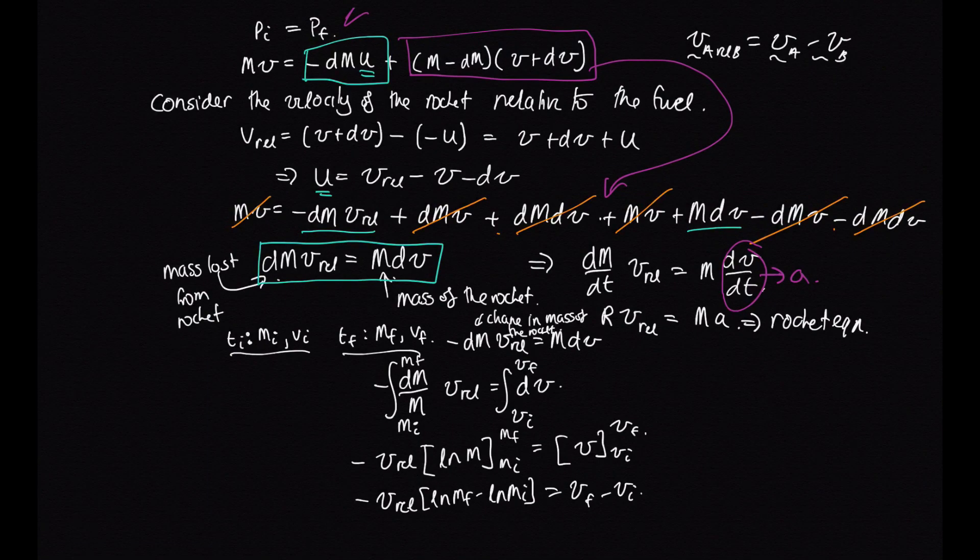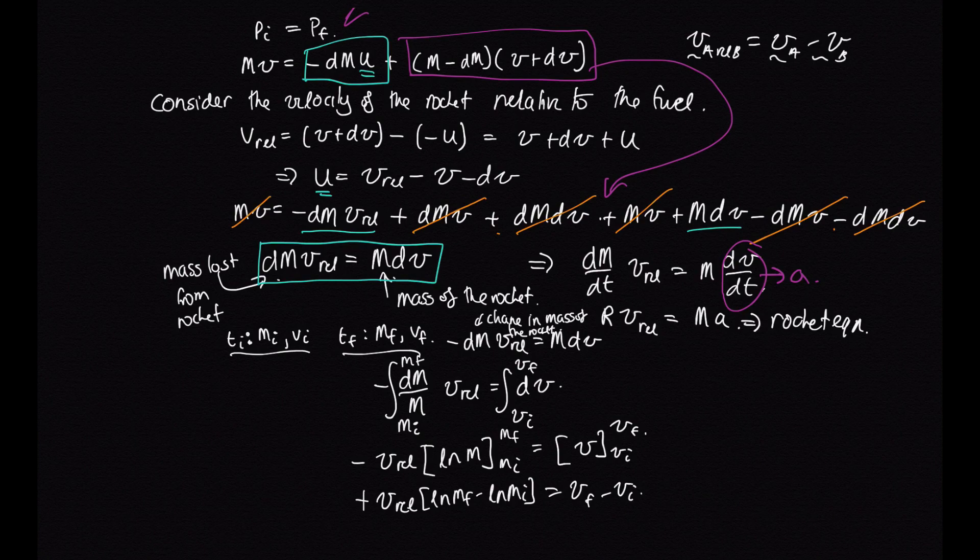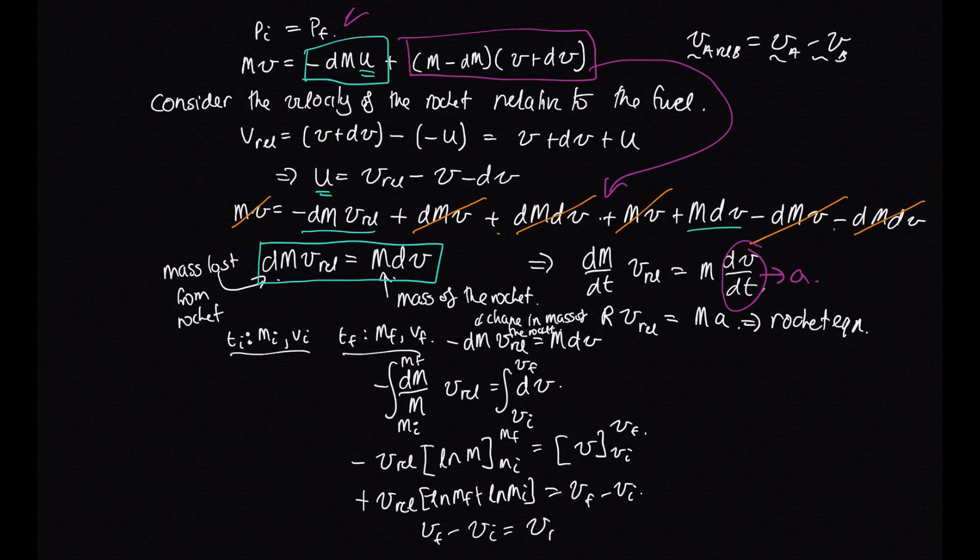And so let's get rid of this negative sign by putting a negative there and a positive there. Now, when we do log m initial minus log m final, we can write that as a fraction inside the logarithm.